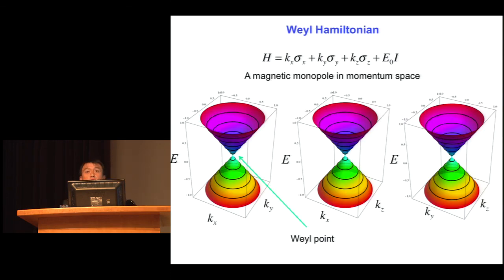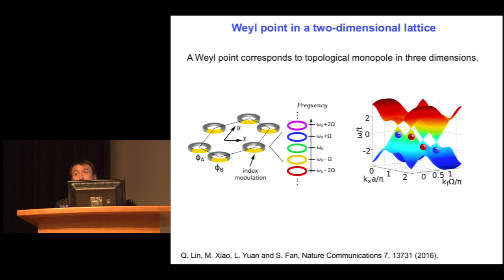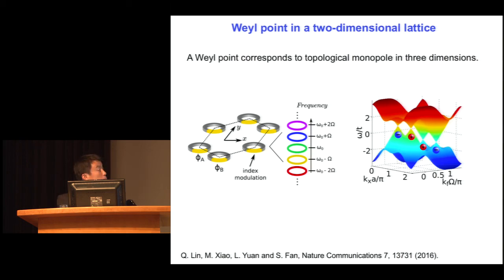In the last couple of minutes, let me briefly show a slightly fancier example. Lately, there have been very interesting things people talk about called the Weyl Hamiltonian in three dimensions — a magnetic monopole in momentum space with very interesting topological effects. People have explored it in very complicated three-dimensional structures, both in the electron world and in the photonic world. What we show here, without going into detail, is that instead of building a very complicated three-dimensional structure that's difficult to make, you can take a two-dimensional structure straightforwardly makeable by modern lithographic techniques, put modulators on a two-dimensional array of rings, control the modulation phase, and actually do Weyl point physics — which is inherently three-dimensional topological physics — now in a two-dimensional system with an added frequency dimension.